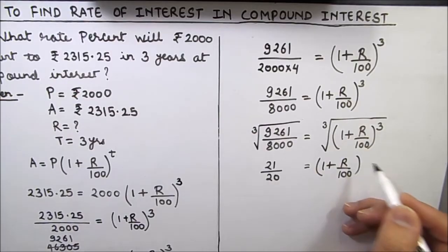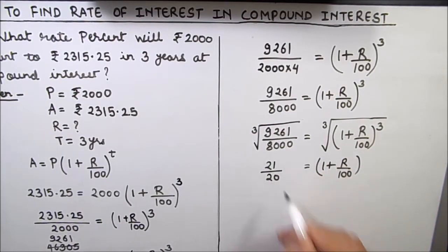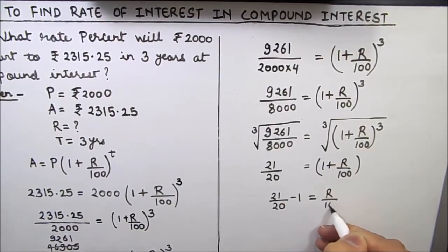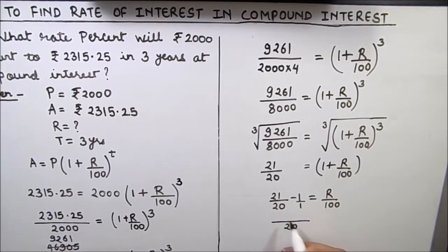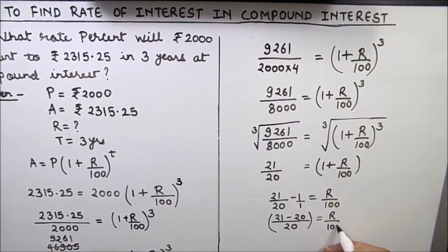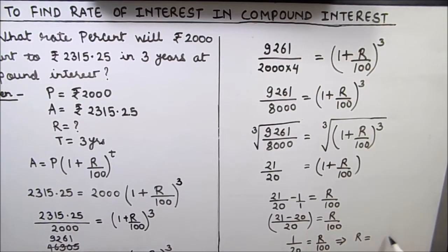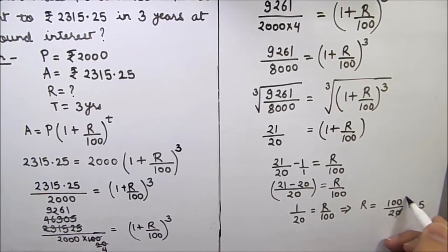Now our variable is r, so we separate the variable and constant. Bringing 1 to the left hand side: 21 divided by 20 minus 1 equals r divided by 100. Writing 1 as 1 over 1 and taking LCM of 20, we get 21 minus 20 divided by 20 equals r divided by 100. So 1 over 20 equals r over 100, giving r equal to 100 divided by 20 by cross multiplication. R comes out to be 5, so our final answer is rate of interest 5%.